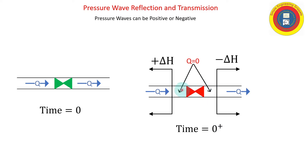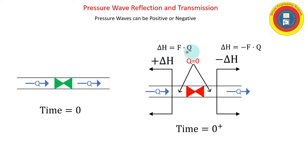Slamming the valve shut brings the flow to zero on each side — ignoring cavitation and vapor formation downstream. There is a negative pressure wave propagating to the right, bringing the flow to zero on the downstream side. On the upstream side, there is a positive pressure wave propagating to the left bringing the flow to zero. Both of these can be calculated with the Joukowski relation.